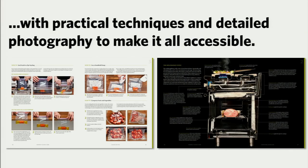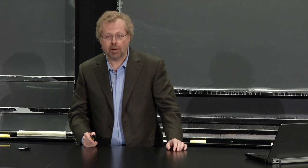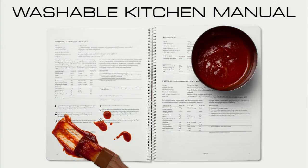Like Modernist Cuisine, it uses photography and clear text to explain how things work. We cut things in half—including a Viking stove, which Viking fortunately donated to us, because they don't work so well after you cut them in half, particularly the gas part. Like Modernist Cuisine, it comes with a washable kitchen manual, because if you're going to cook with it, it's going to get dirty.